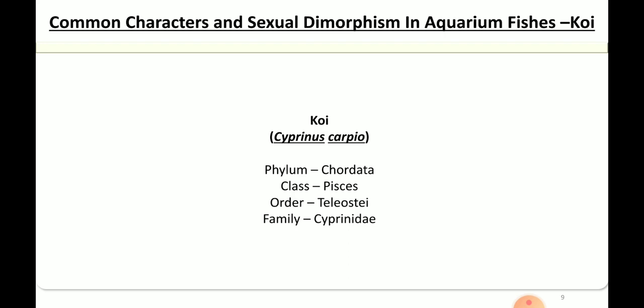Koi belongs to the phylum Chordata, class Pisces, order Teleost, and family Cyprinidae. Next, moving to the common characteristics and dimorphism of this fish.